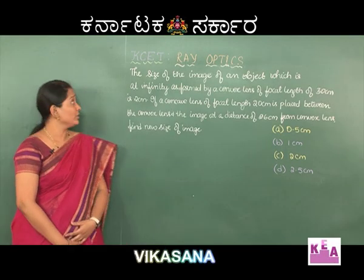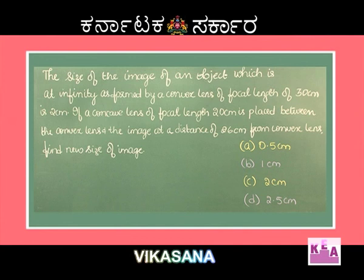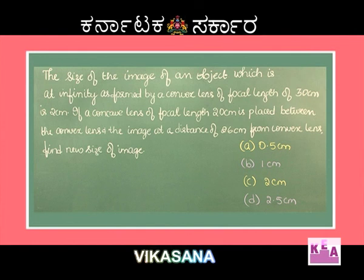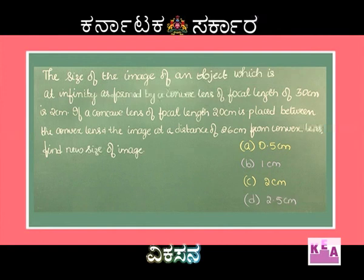Moving on to the next question. The size of the image of an object at infinity as formed by a convex lens of focal length 30 centimeters is 2 centimeters. If a concave lens of focal length 20 centimeters is placed between the convex lens and the image at a distance of 26 centimeters from the convex lens, find the new size of the image. Options: A) 0.5 cm, B) 1 cm, C) 2 cm, and D) 2.5 cm.